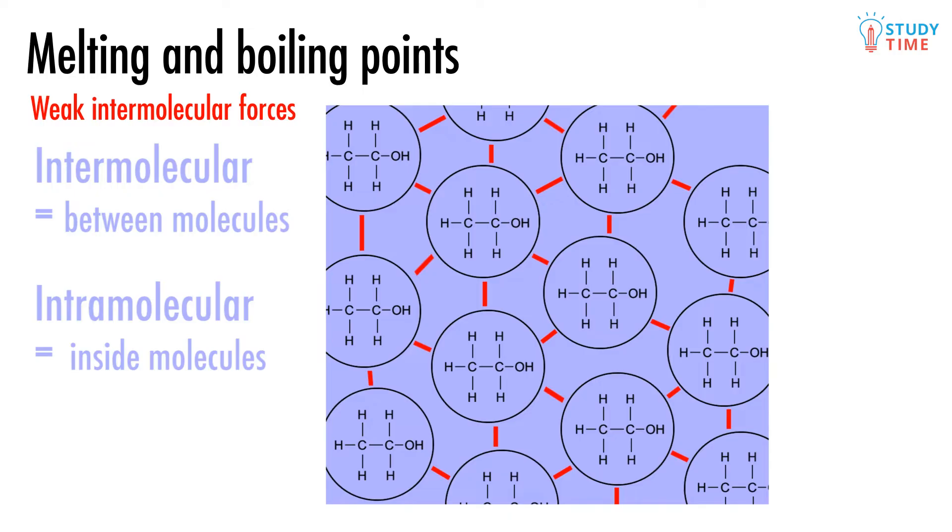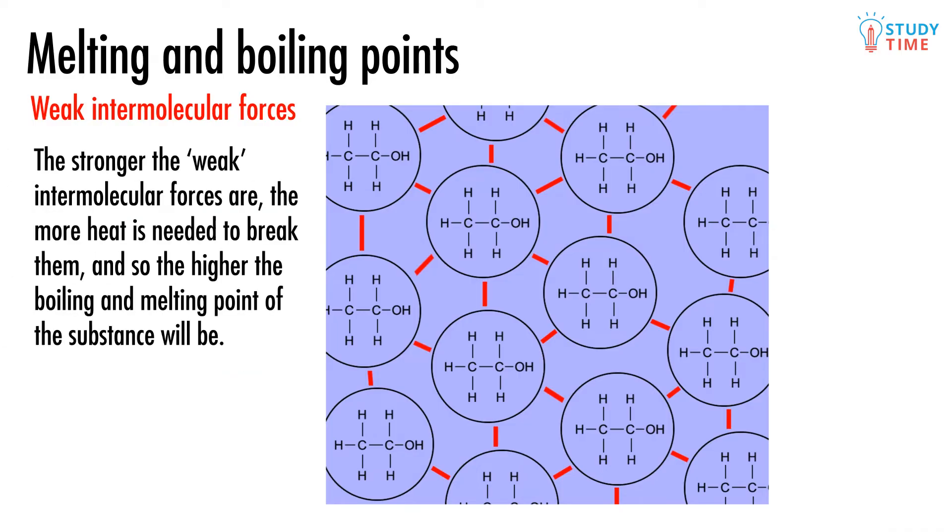In red are these weak intermolecular forces that we've been talking about. Those circles around the molecules don't actually exist in real life, we've just used them to show you how the entire molecule is attracted to its neighbors. When we melt or boil any substance, we're breaking open these intermolecular forces and doing that requires energy. That basically means that the stronger the weak intermolecular forces are, the more heat is needed to break them, and so the higher the boiling and melting point of the substance will be.